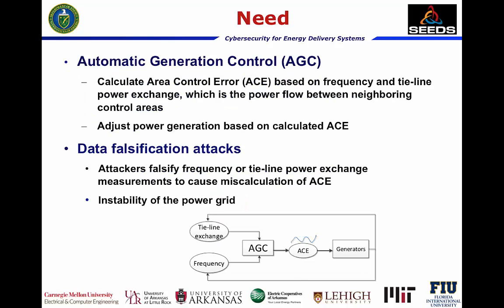Automatic Generation Control is a key control system in the power grid. Based on the measured frequency of a control area and the measured tie-line power exchange with neighbor control areas, it periodically calculates the area control error and adjusts this control area's power generation based on the calculated ACE.